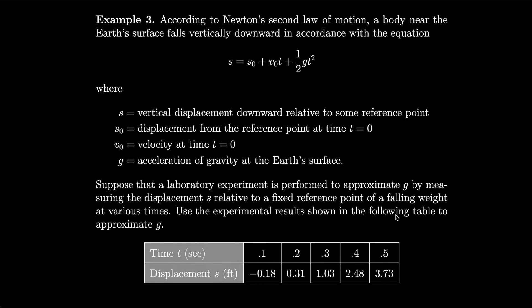According to Newton's second law of motion, a body near the Earth's surface falls vertically downward in accordance with the equation S = S0 + V0*t + (1/2)g*t^2, where S is the vertical displacement downward relative to some reference point, S0 is the displacement from the reference point at time t = 0, V0 is the velocity at time t = 0, g is the acceleration of gravity at the Earth's surface. Suppose that a laboratory experiment is performed to approximate g by measuring the displacement S relative to a fixed reference point of a falling weight at various times. Let's use the experimental results shown in the following table to approximate g.